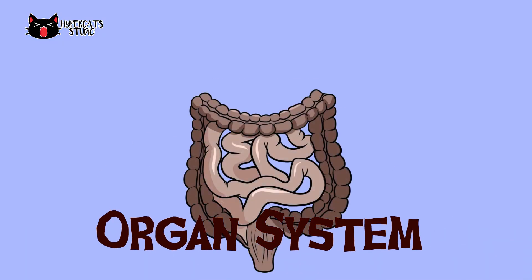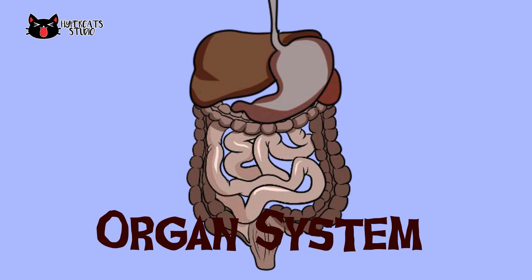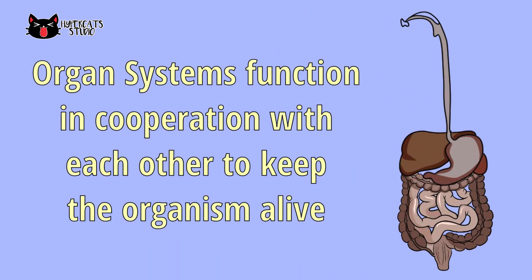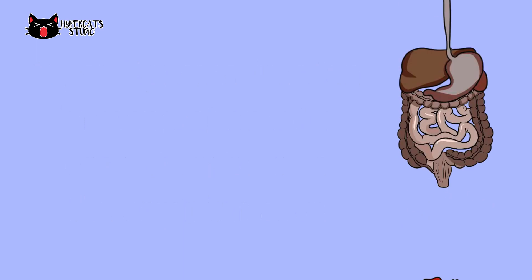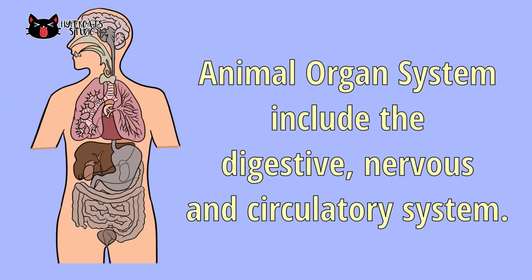Organ systems are organs that work together to perform a certain physiological function. While each organ system in an organism works as a distinct entity, they all function in cooperation with each other to help keep the organism alive. In plants, organ systems include the root and shoot system, while animal organ systems include the digestive, nervous, circulatory system, and others.